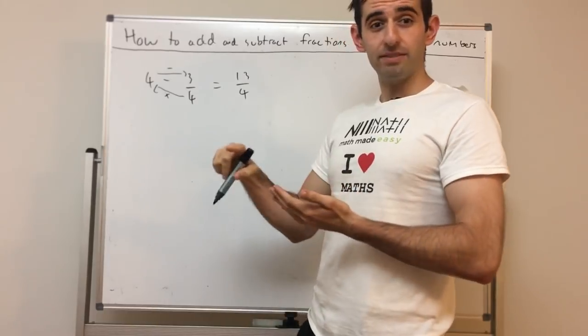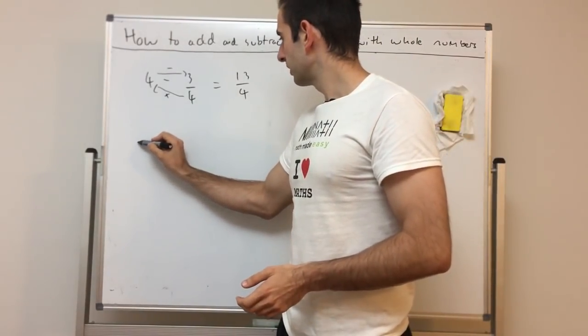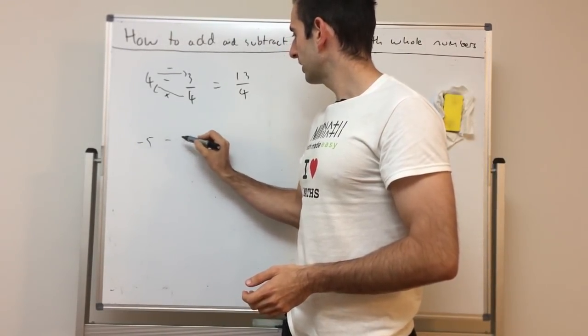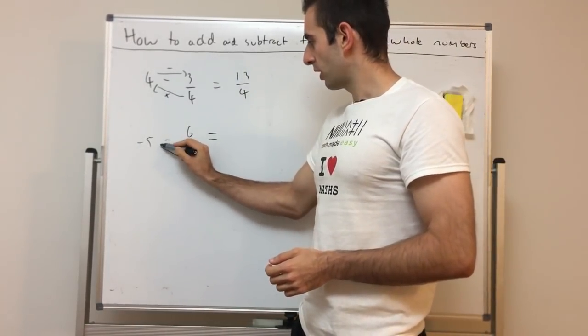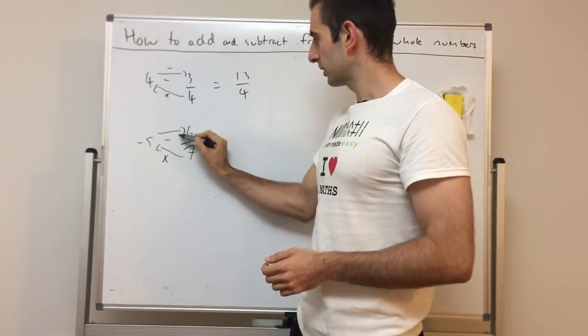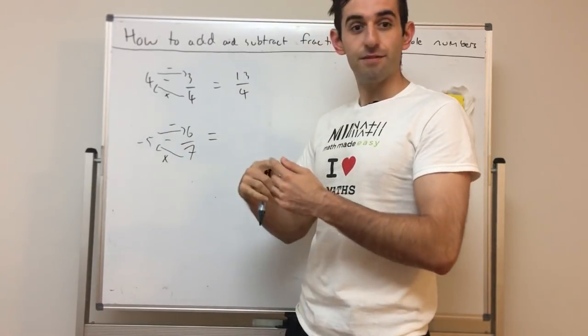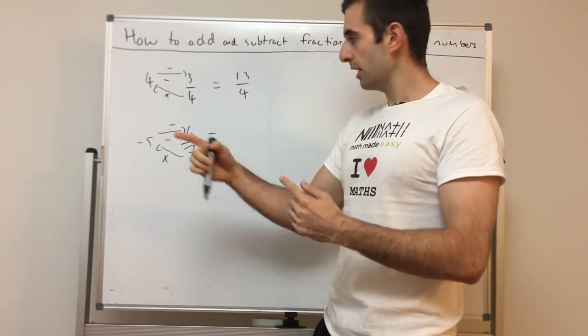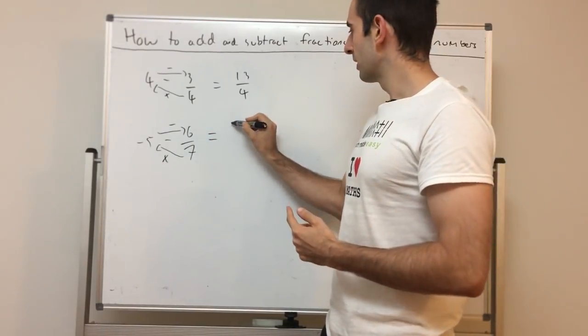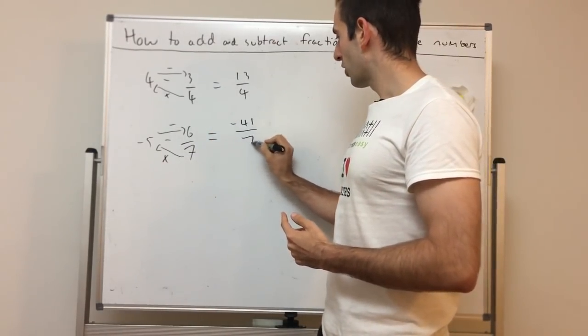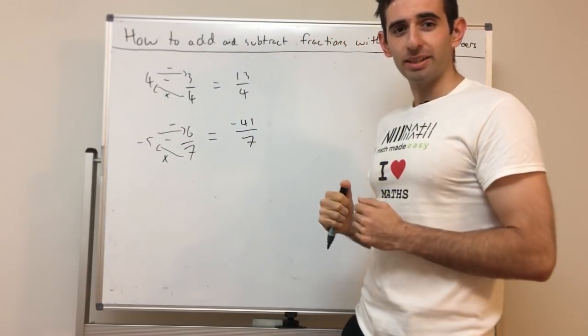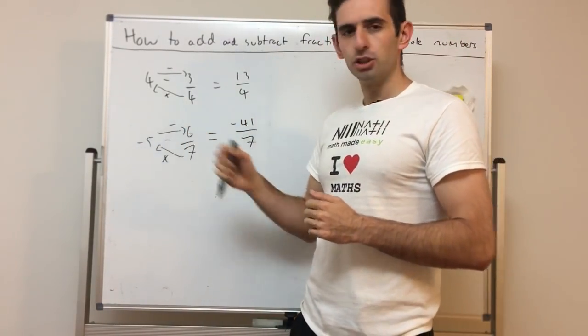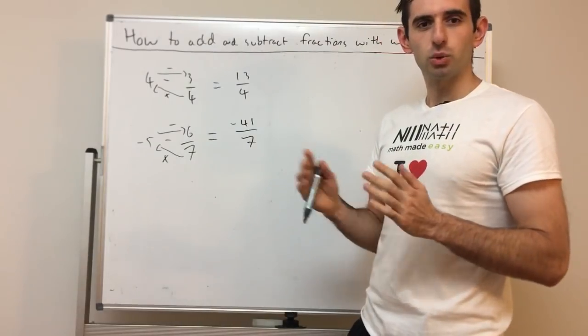Let's do another one with a negative number: negative 5 minus 6 over 7. You times and then subtract. 7 times negative 5 is negative 35, minus 6 is negative 41 over 7. Again, make sure to check out that adding and subtracting negative integers video to see tricks on how you can deal with negative integers quickly.